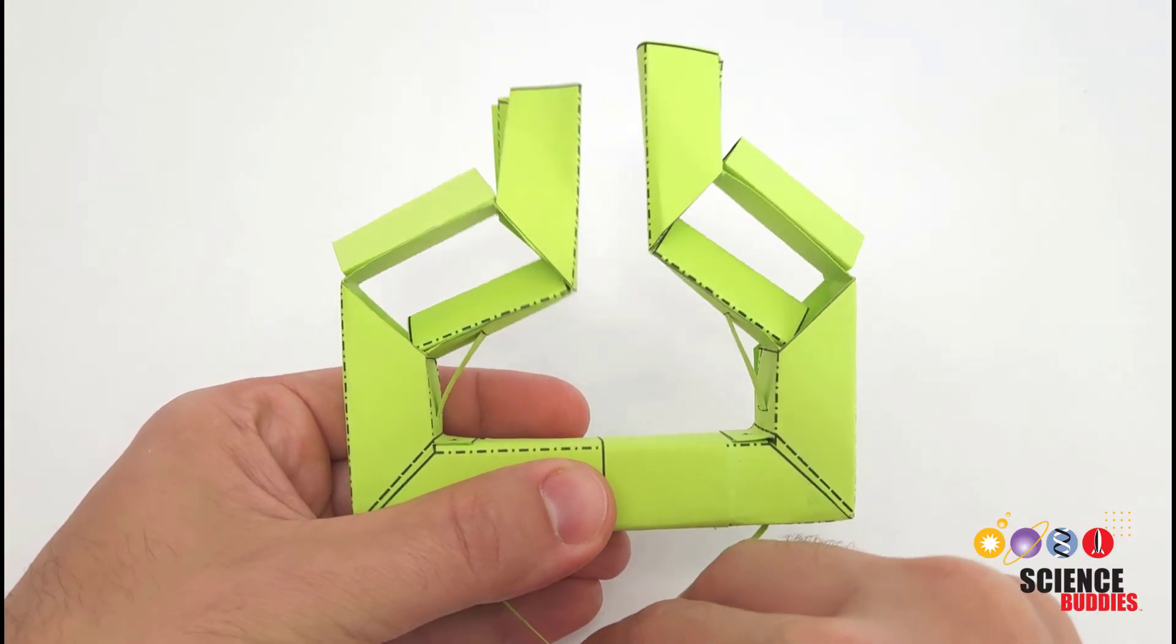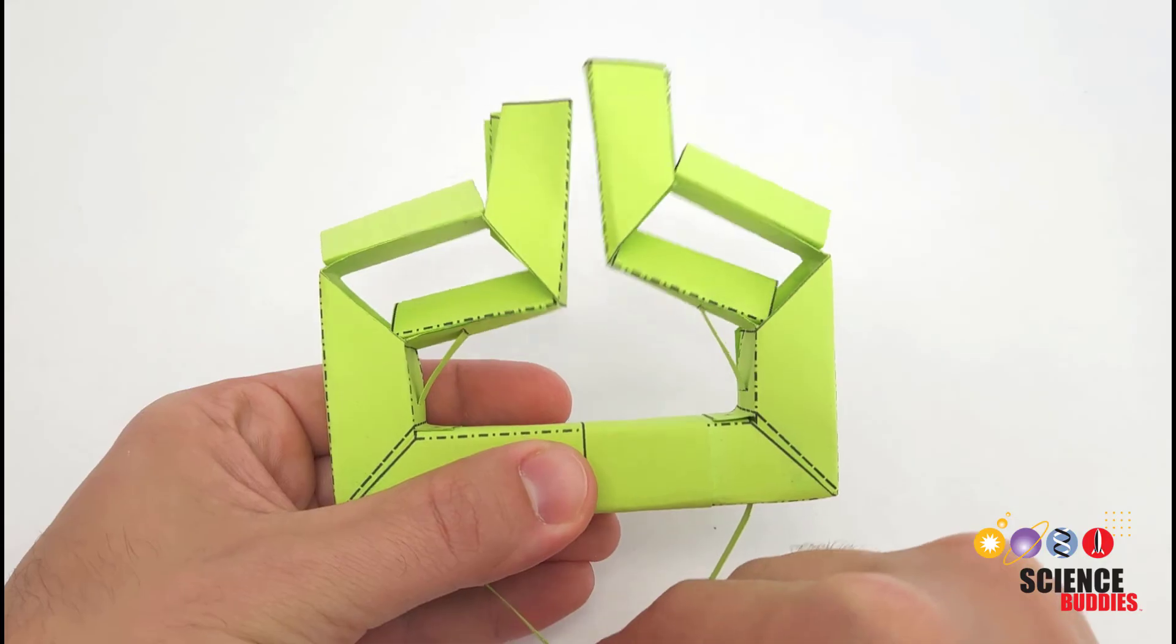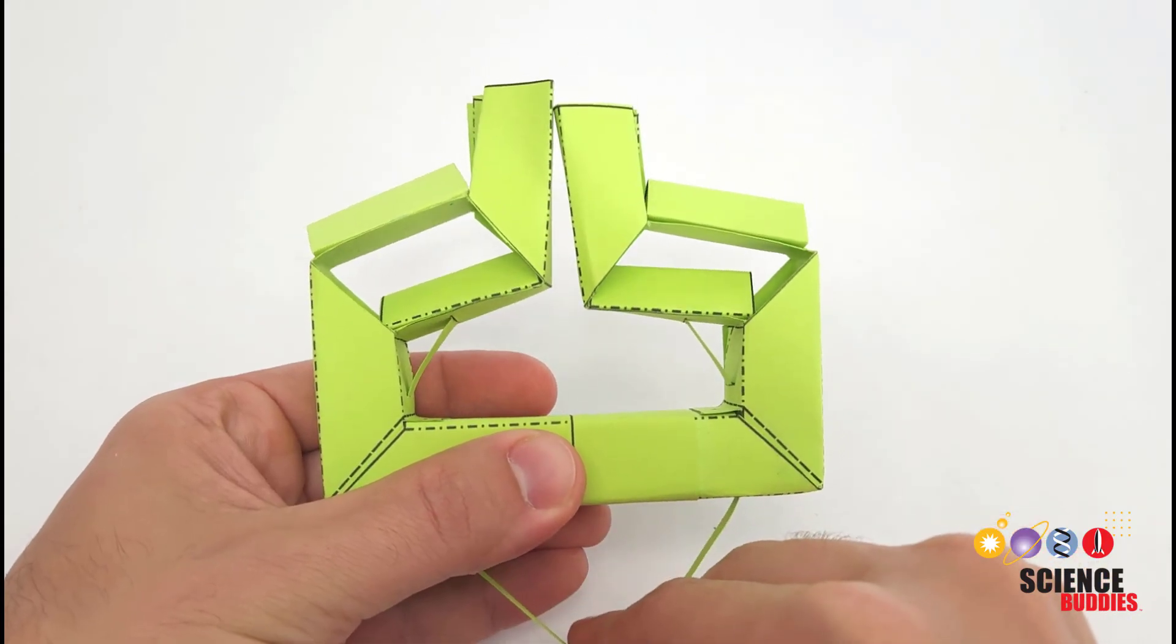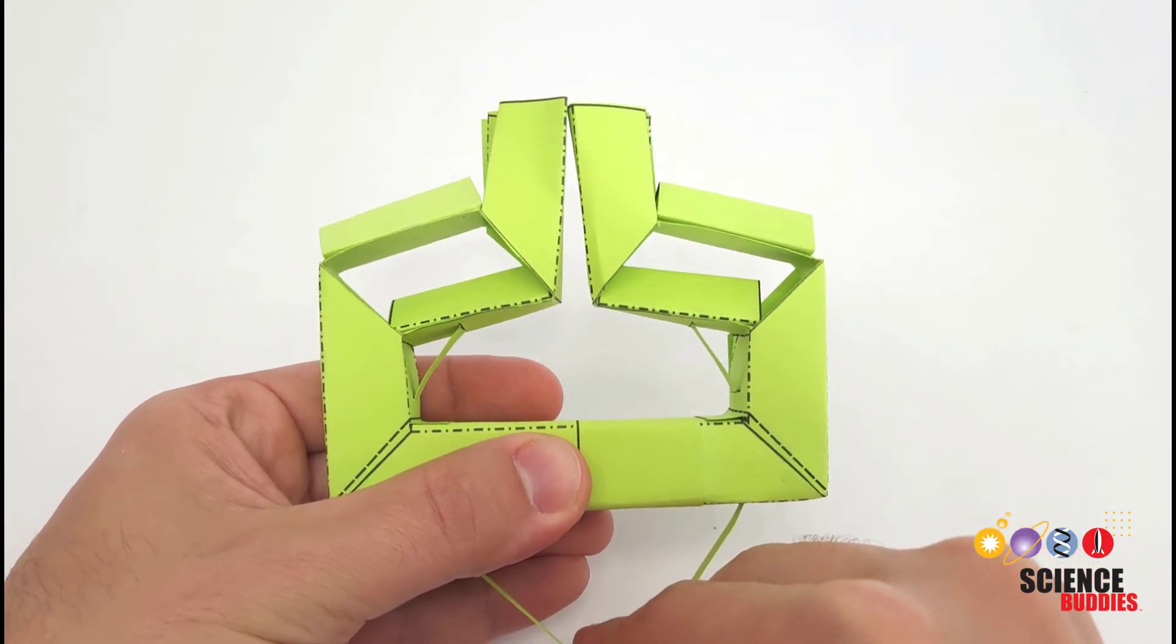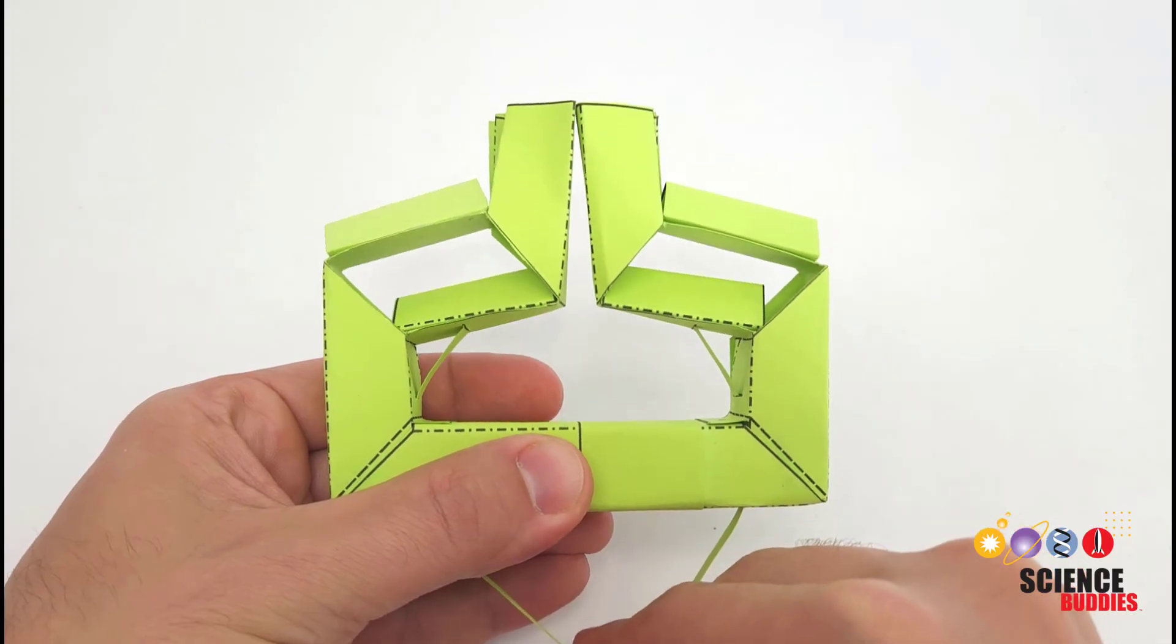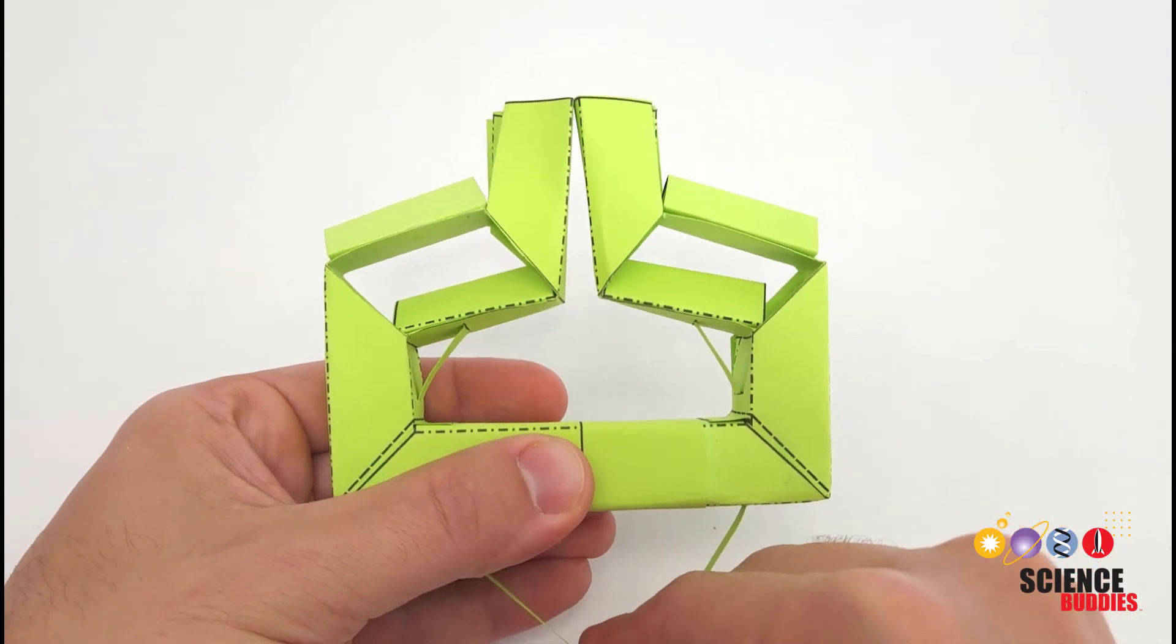If you check out the video description, you can also find design files for a more advanced gripper that keeps the finger surfaces parallel to each other as they move. This could be more useful for gripping flat or rectangular objects.